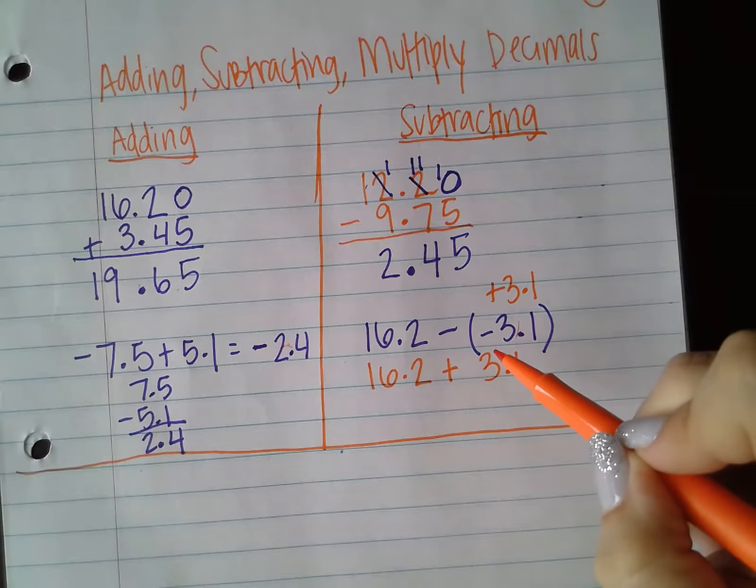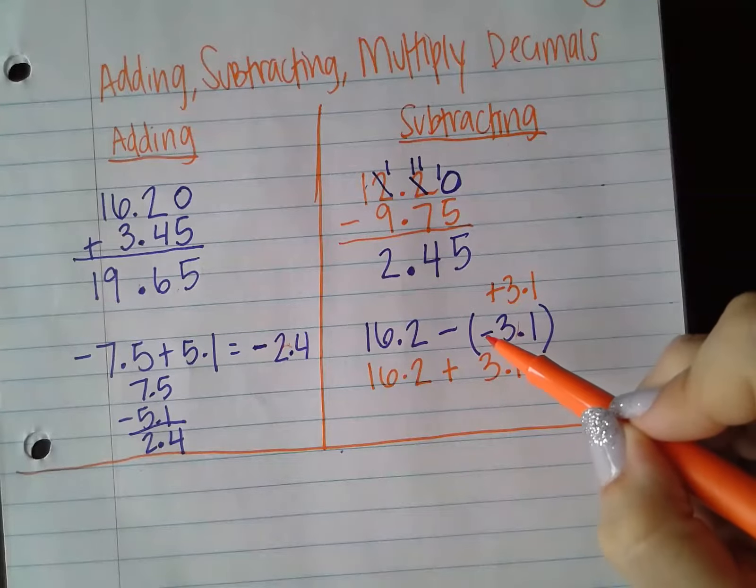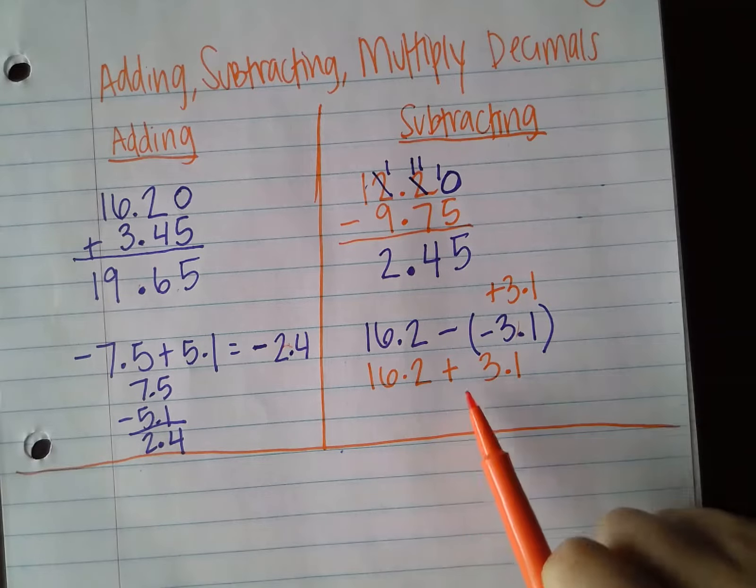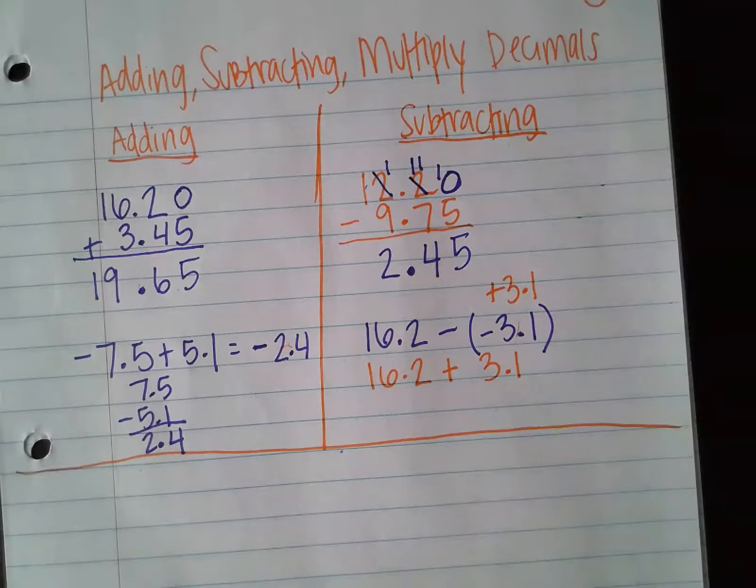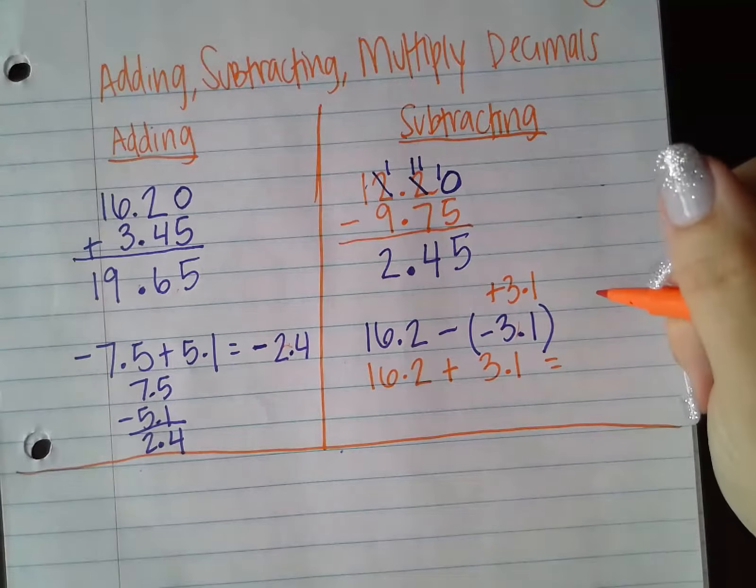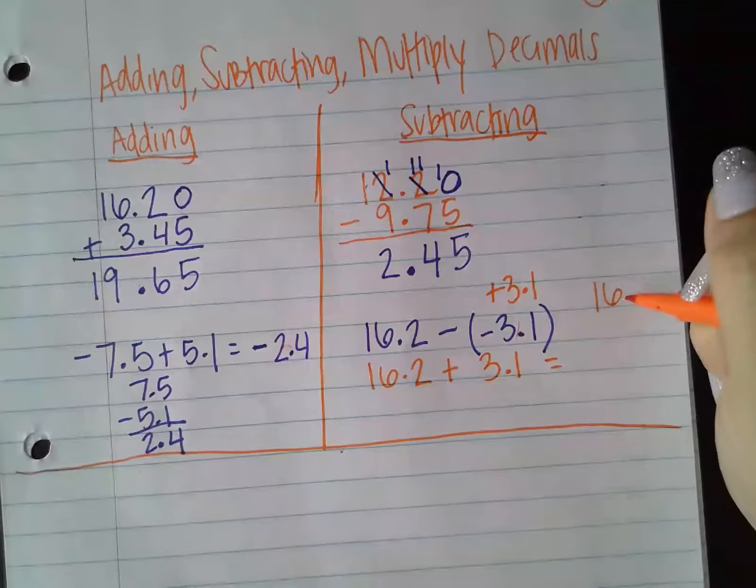So every time we subtract a negative, we end up at a value that is bigger than what we start with. So our answer is going to be bigger than 16.2. So if we do this now, we converted this to an addition problem. If we solve this, we can rewrite it like this.